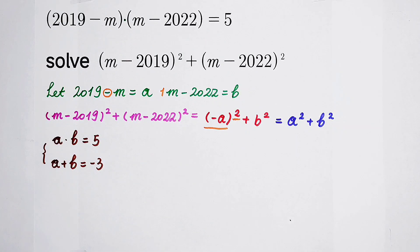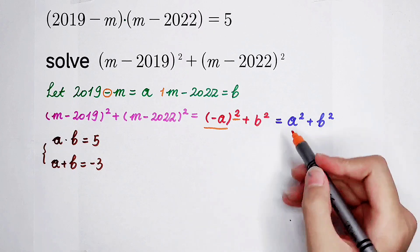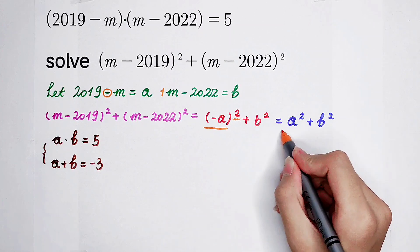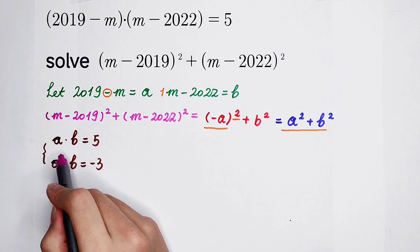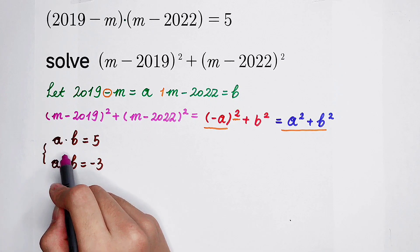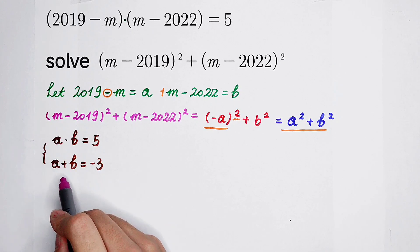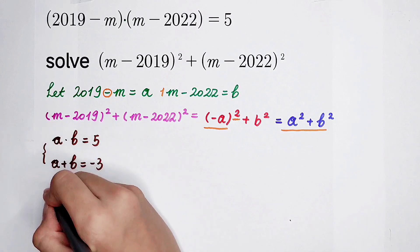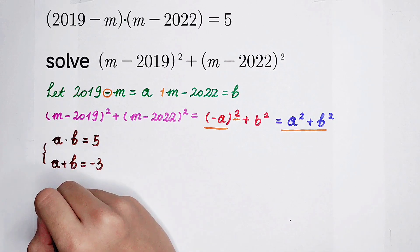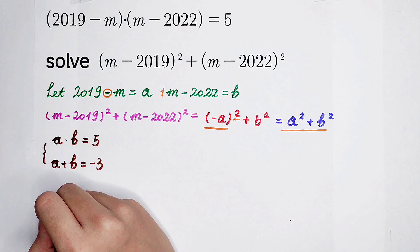Our job is to find the value of a squared plus b squared, just from the multiplication and the addition of a and b. Let me remind you of the first binomial formula: (a plus b) all squared equals a squared plus 2 times ab plus b squared.